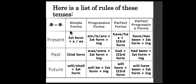Here are the rules for all tense forms. For simple present tense: first form of verb plus S or ES. For progressive or continuous form: am/is/are plus first form plus ING. Perfect form: have/has plus third form. Perfect progressive form: have/has/been plus first form plus ING.